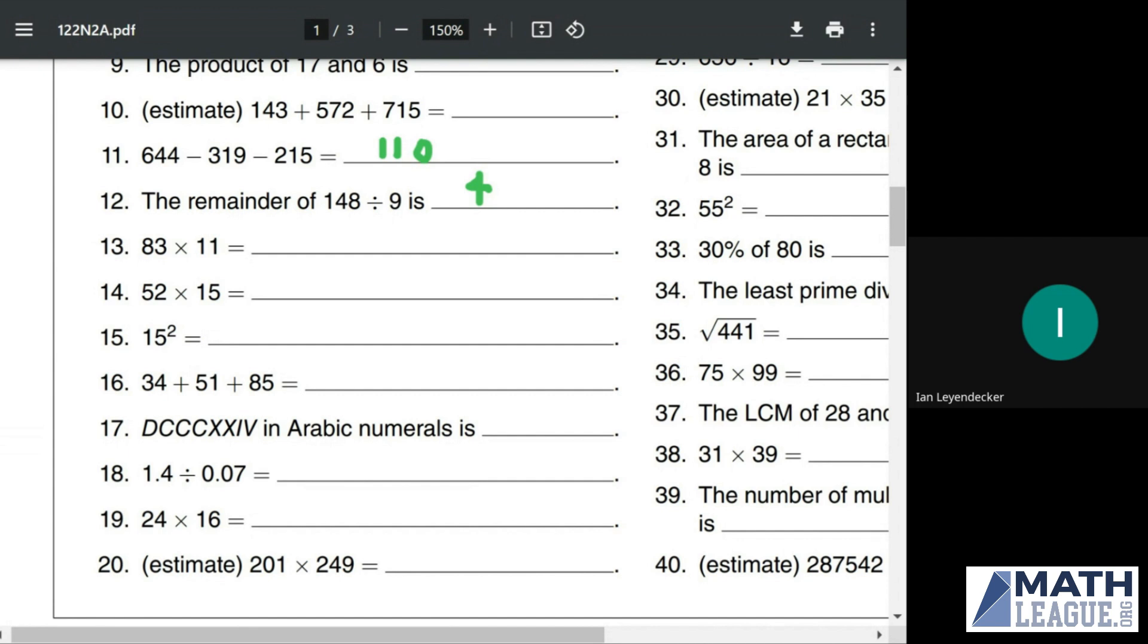For 83 times 11, the trick with multiplying a two-digit number by 11 is you add the digits together. The first digit is the ones digit of the number that isn't 11. The hundreds digit will be the tens digit of the other number, but the middle digit will be the sum of the numbers. In this case, the sum of the two digits in 83 is 11, so the middle digit is going to be 1 and the hundreds digit is going to be 8 plus 1 or 9, for 913.